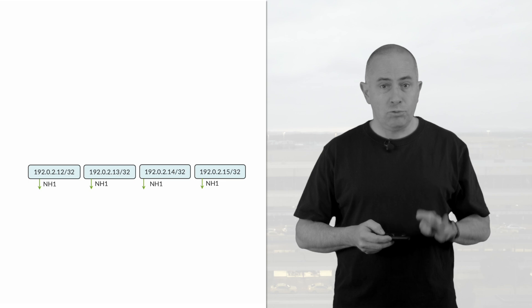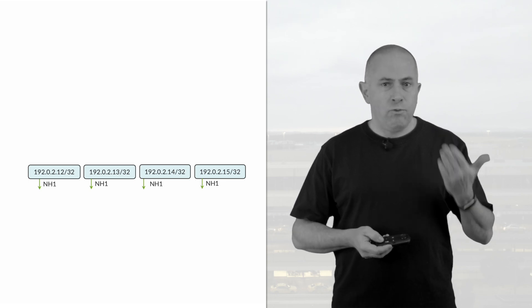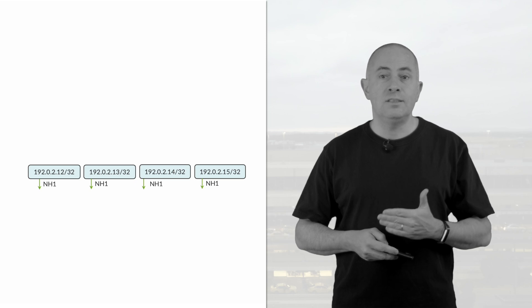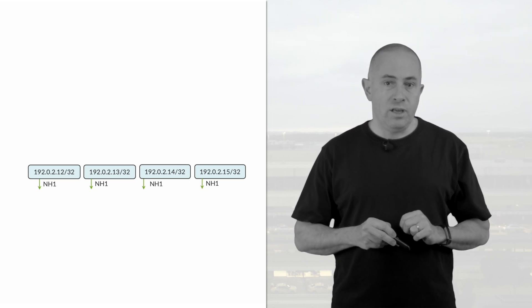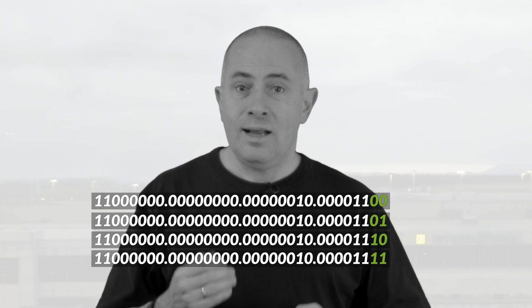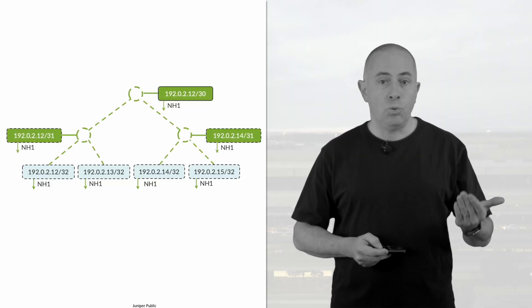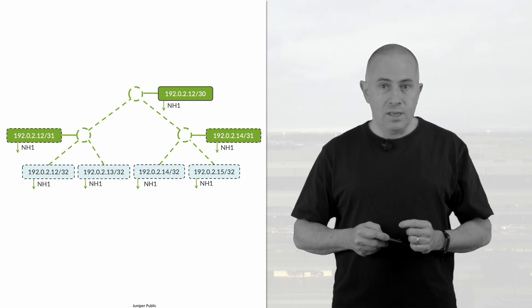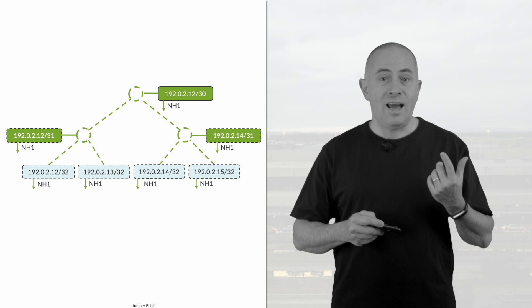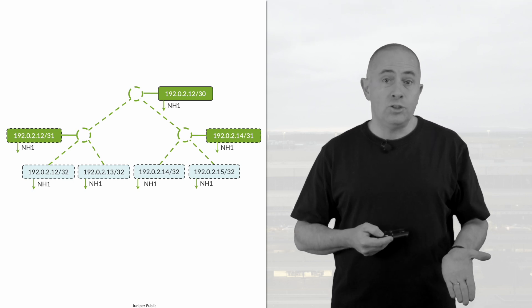The second principle is the compression itself: if many routes can be aggregated into a superset, just program this one and not the contributing prefixes. Imagine we received four host routes — four IPv4 /32s all pointing to the same next-hop, NH1. They have a similar forwarding behavior. Representing them in binary, the first 30 bits of these four prefixes are identical — that's the subnet mask — and the last two bits cover all possible combinations. That gives us 192.0.2.12/30 pointing to NH1. We only install this entry in the FIB, providing the exact same service as four host routes, and it occupies just a quarter of the memory space.